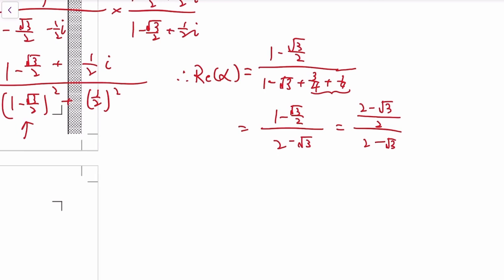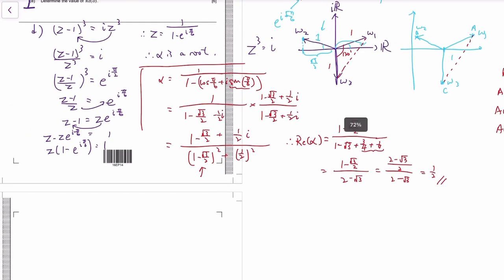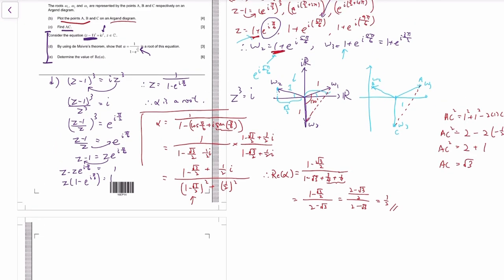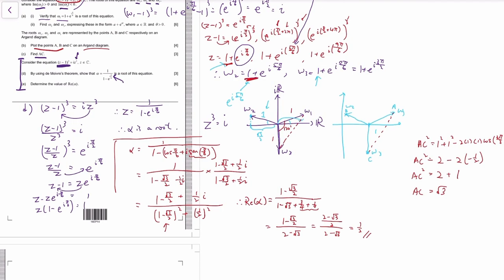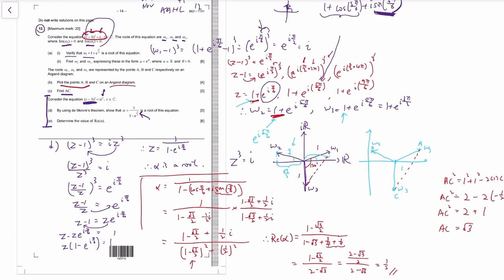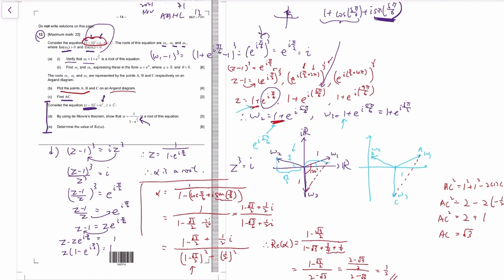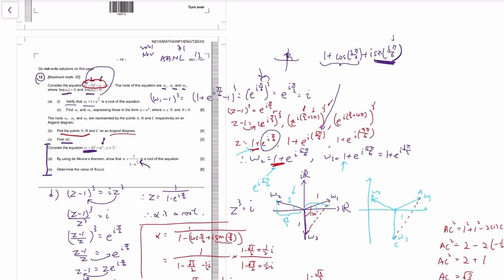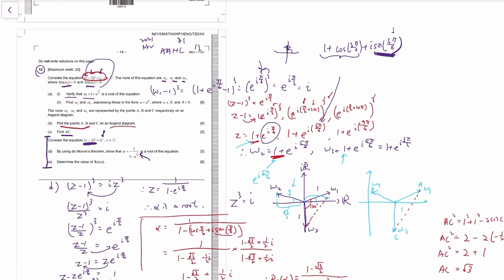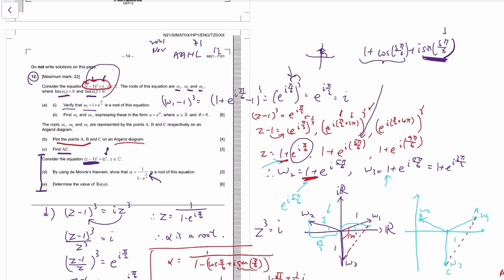So we get a common denominator: 2 minus root 3 over 2, over—oh, they cancel out, so it's a half. The 2 minus root 3 cancel out, so the real part is a half. Kind of tricky. This is probably the hardest question of the November AAHL papers.